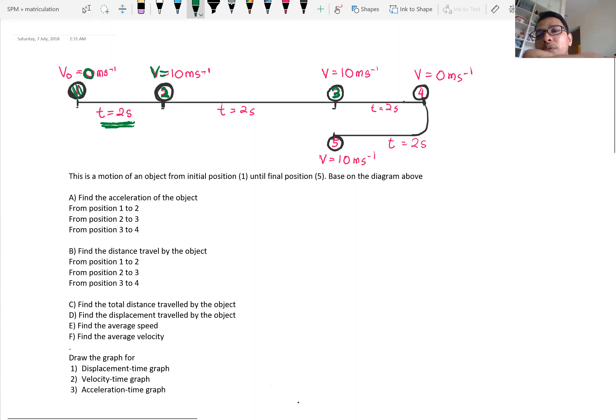So from 3, it moves to position 4. From 10 meter per second, now the velocity decreases to 0. So the speed decreases to 0, meaning rest or stationary again.